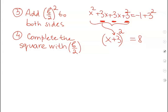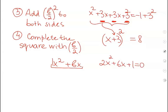Something interesting to note: for completing the square, we use the expression x squared plus bx, where the coefficient of x squared is 1. What do we do if the coefficient of x squared is not 1? Say we have the equation 2x squared plus 6x plus 1 equals 0. Well, we can just divide each and every term on both sides by 2. We get x squared plus 3x plus one half equals 0, and then we continue our work according to the steps.